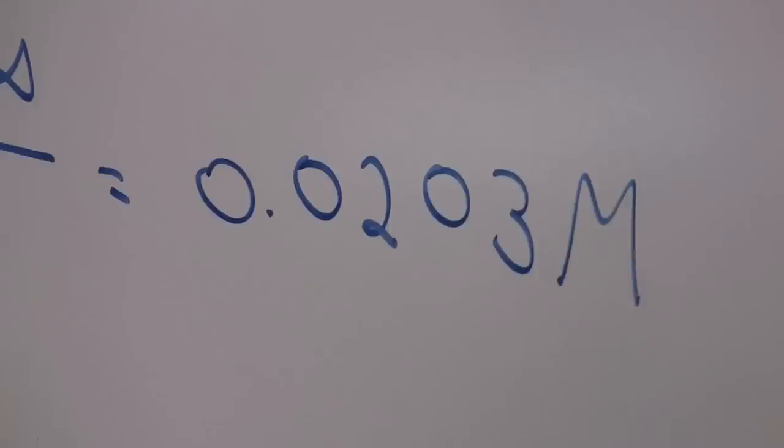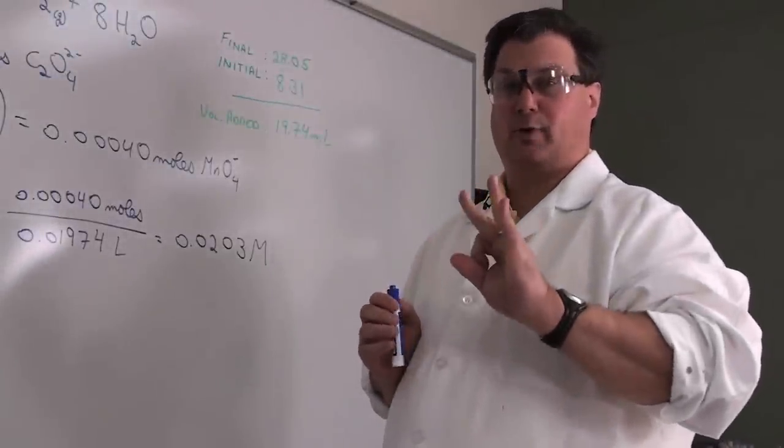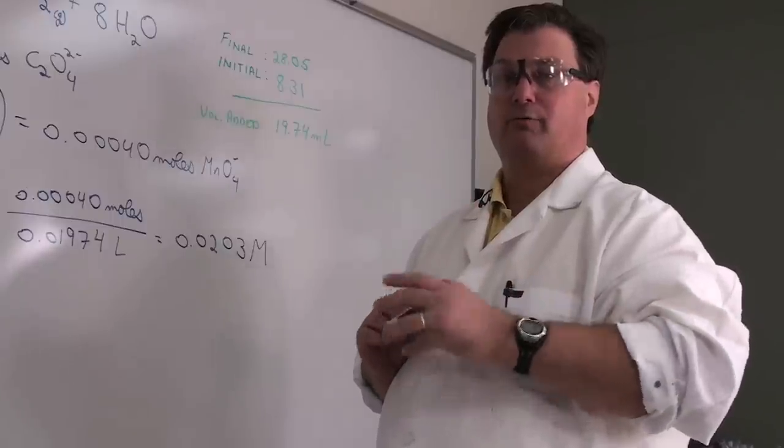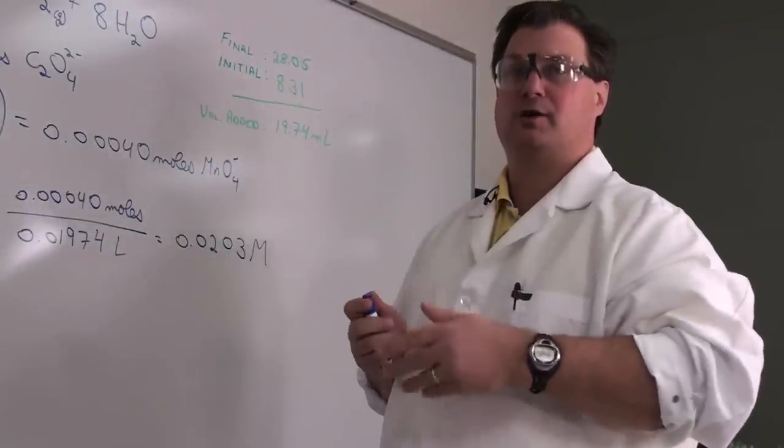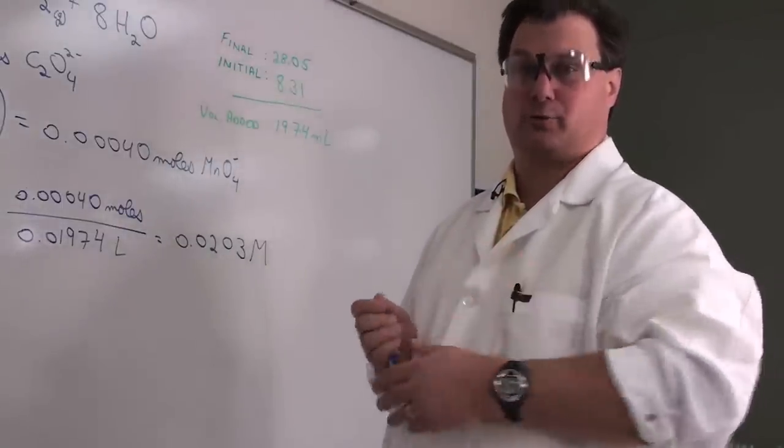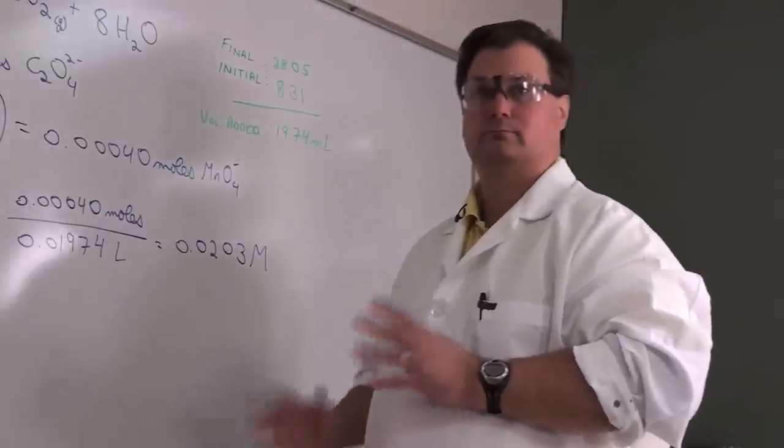That is our unknown permanganate concentration. So you guys will carry out this titration three times. Therefore, for each titration you can calculate the concentration, and then you will report the concentration as the average value of those three experiments. That's it.